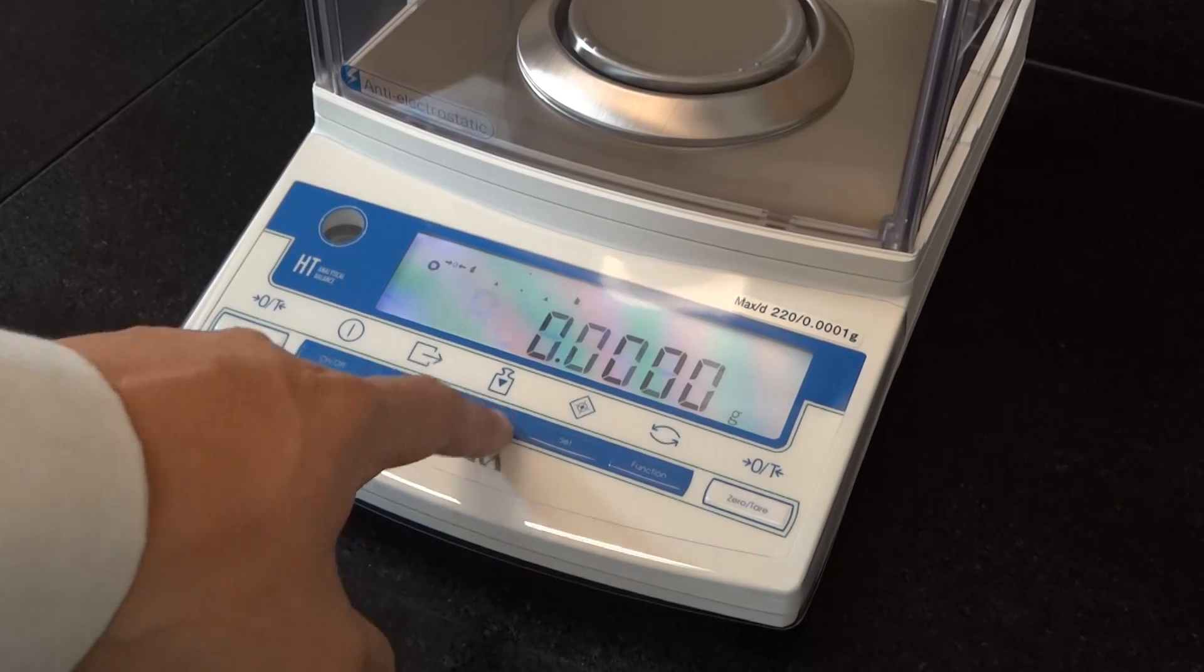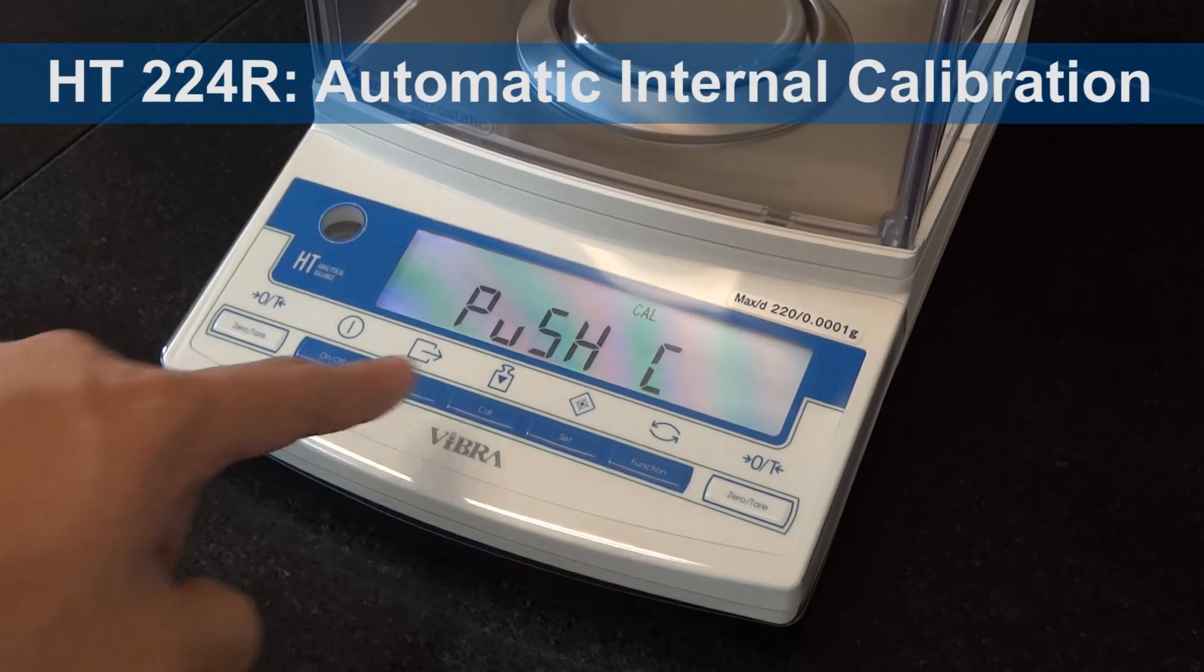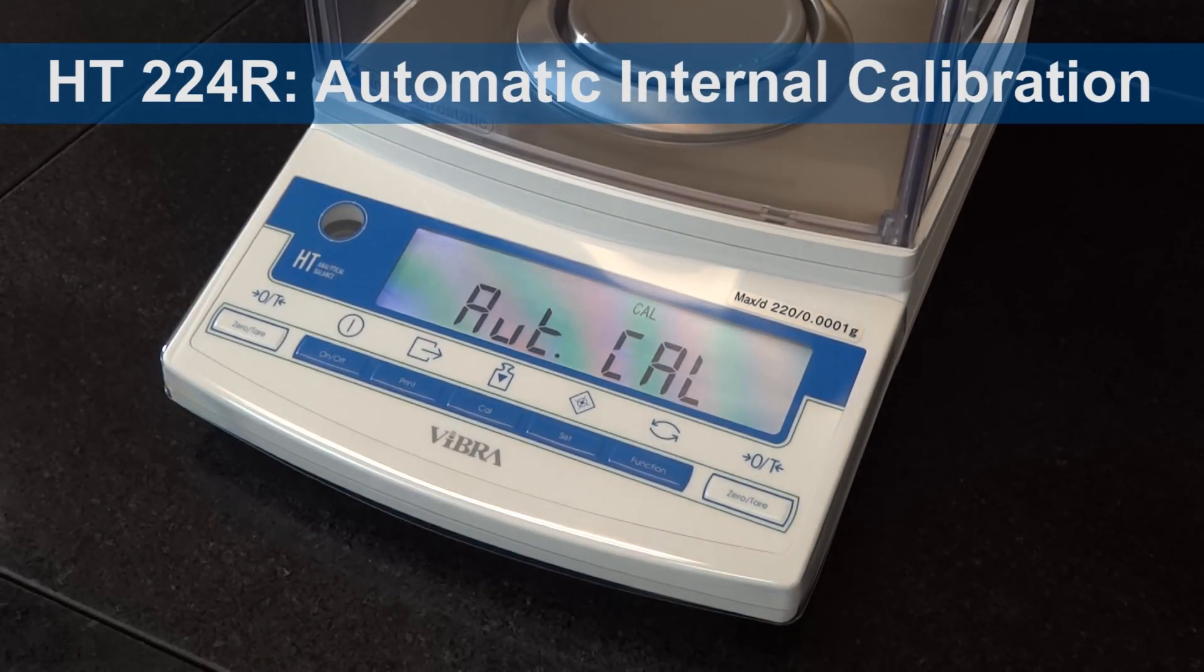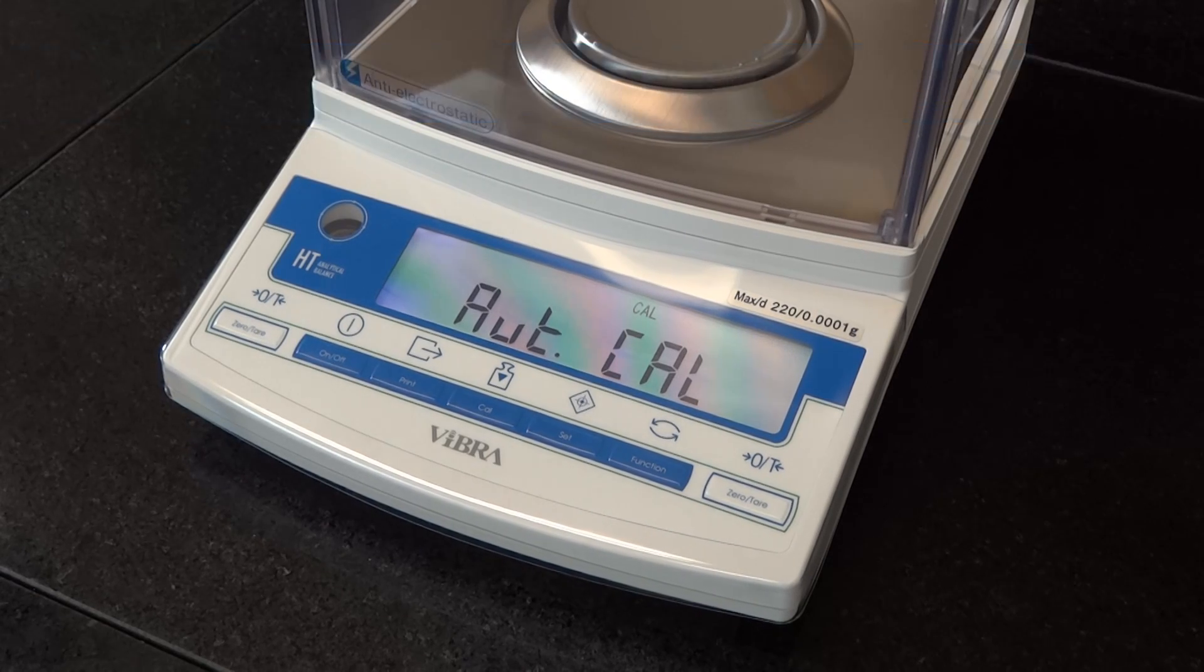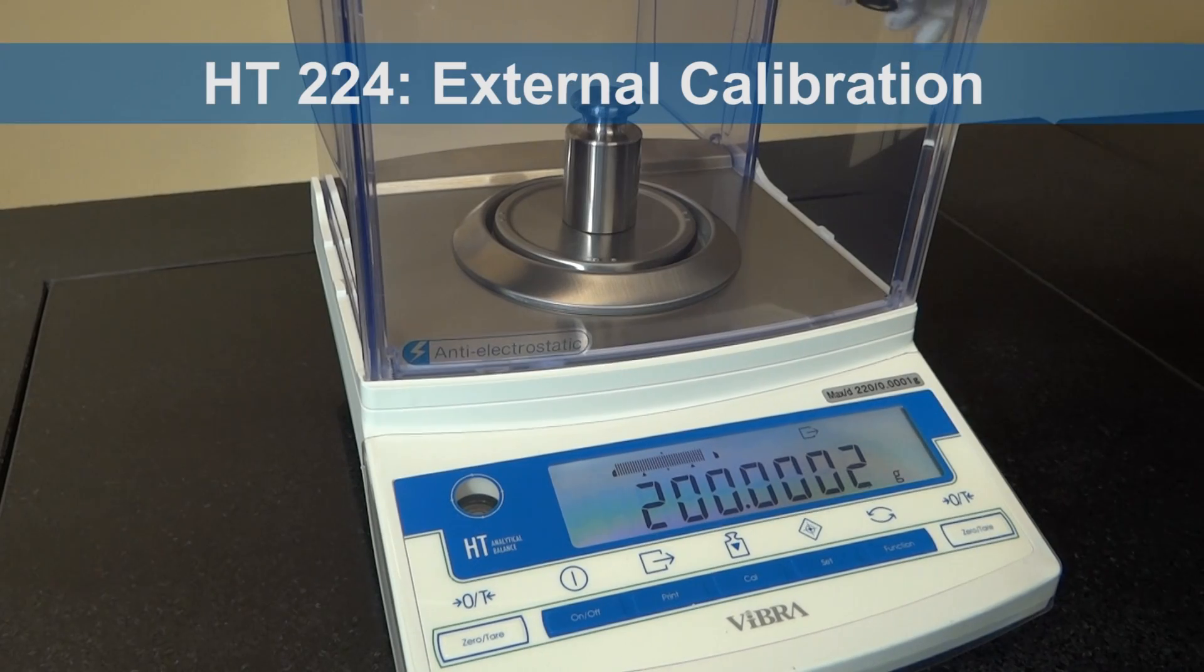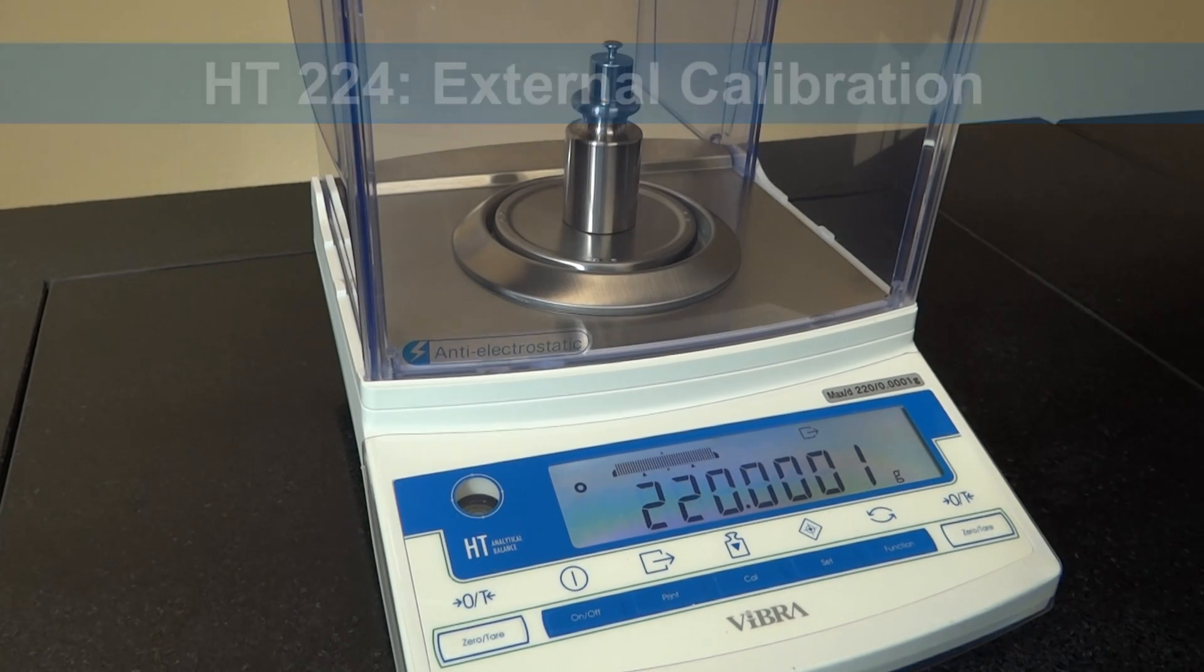Two versions are available. The HT224R offers automatic internal calibration at the push of a button. The HT224 has external calibration and can be provided with a test weight.